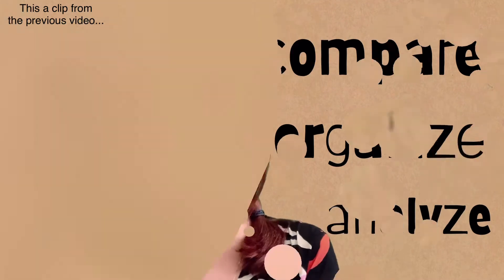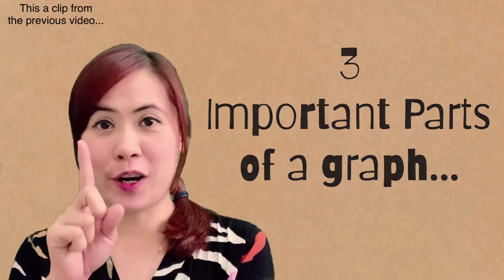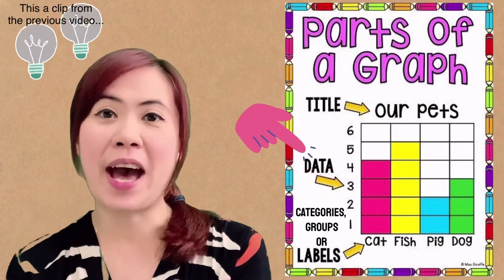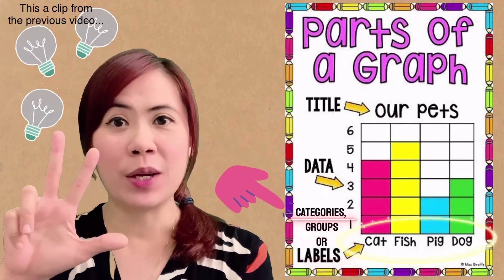We also learned that there are three important parts of a graph. The first one is the title. The second one is all about the data. And the third one is all about the categories, groups, or labels.